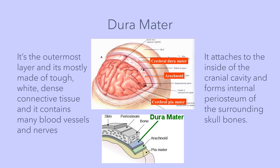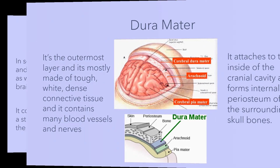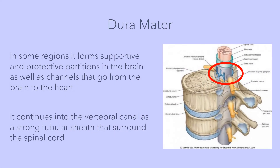The dura mater is the outermost layer and is mostly made of tough, white, dense connective tissue, and it contains many blood vessels and nerves. It attaches to the inside of the cranial cavity and forms the internal periosteum of the surrounding skull bones. In some regions, the dura mater forms supportive and protective partitions in the brain, as well as channels that go from the brain to the heart. It continues into the vertebral canal as a strong tubular sheath that surrounds the spinal cord.